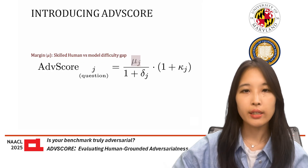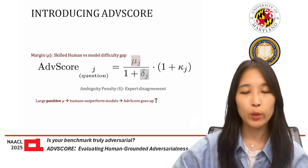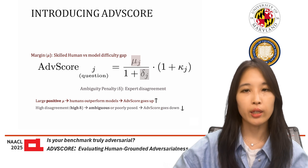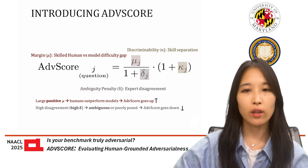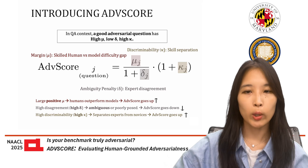ADVScore uses three components from IRT to create a single number that says how adversarial questions are. First, merging: this is the difference between how well skilled humans do versus how well skilled models do. If humans do better than models, ADVScore increases. Second, ambiguity penalty: if expert humans disagree on the answer, that's a red flag — ADVScore penalizes that kind of uncertainty because clarity is key for evaluation. Third, discriminability: this measures how effectively a question distinguishes between more and less knowledgeable participants. If a question rewards genuine understanding rather than luck, the ADVScore increases.